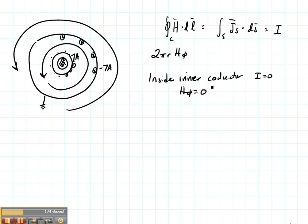Now the same thing is going to happen outside of my outer conductor. So outside the outer conductor, I is going to be 7 amps minus 7 amps which is 0. So again, H Phi is going to be 0.